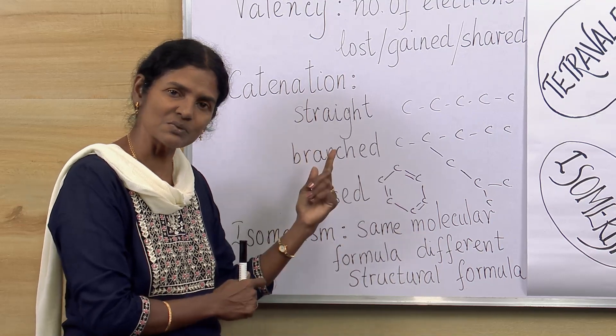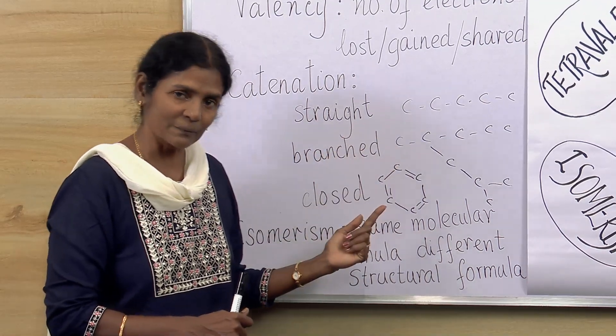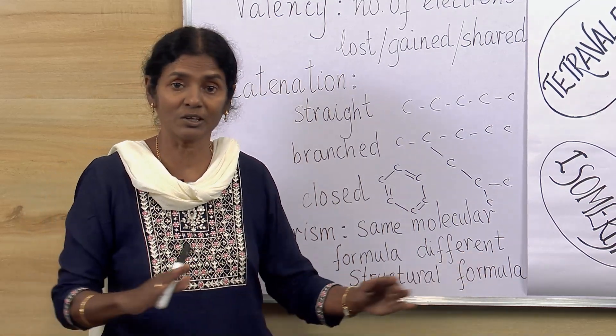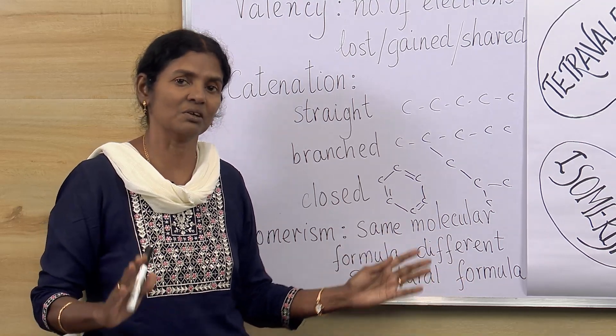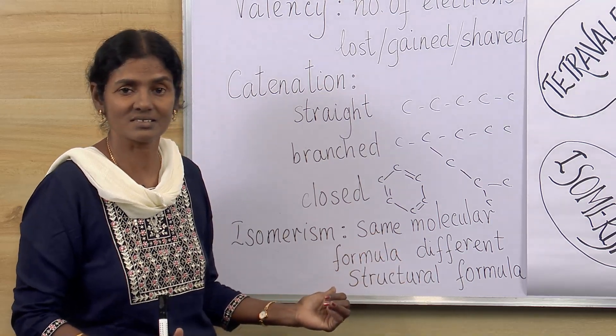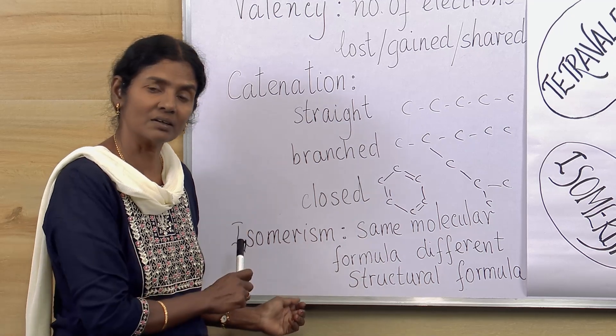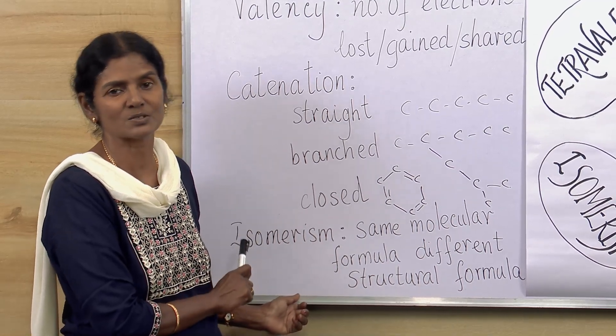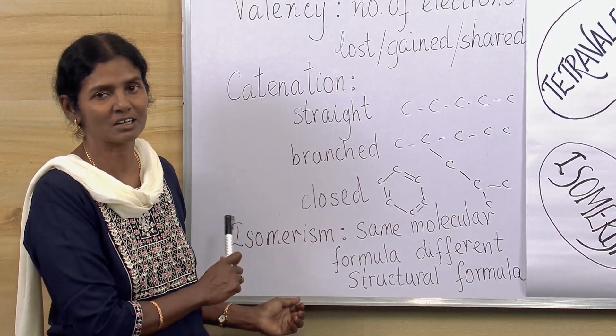Same thing here. Just now we saw the thousands of units are connected together. Then in that case, they could have the same formula. Molecular formula could be the same. But the structures can be very, very different. So many varieties of structures are possible and that is called as isomerism. And by and large, this carbon atom is one which has the maximum isomers possible. So that's definitely a unique nature of carbon atom.